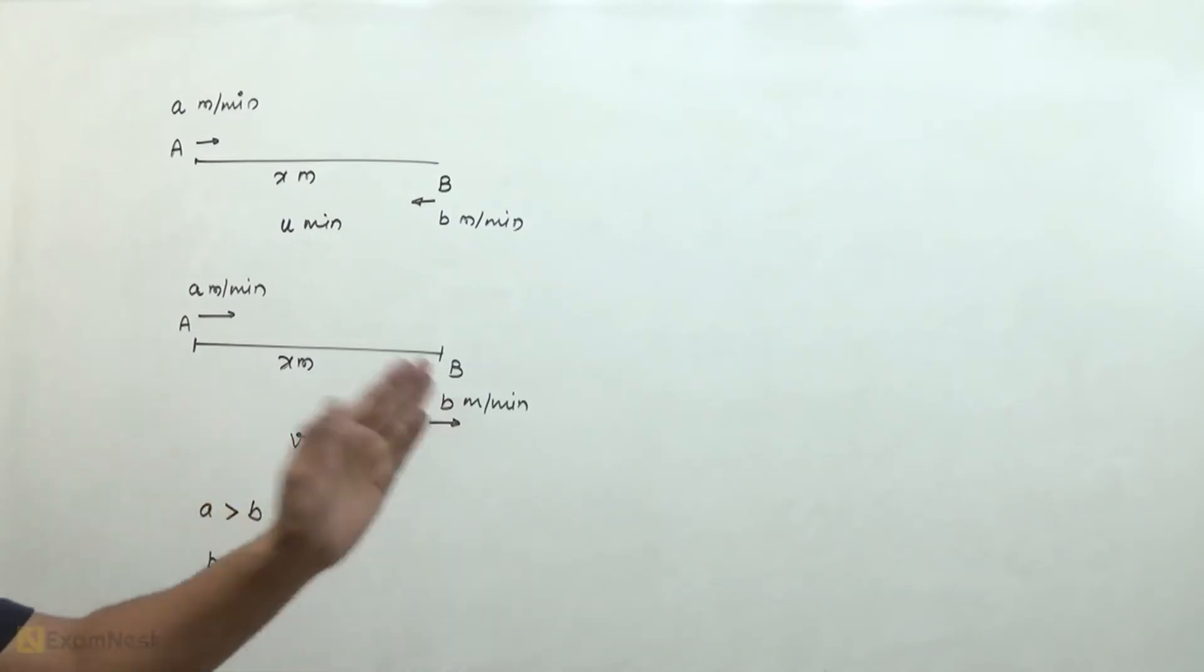When they are flying in the same direction, they pass each other in v minutes. Here we assume that a is greater than b. So b over a is what we need to find using the relative speed concept.